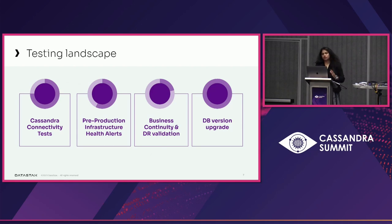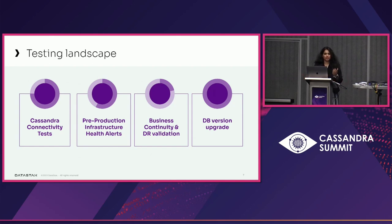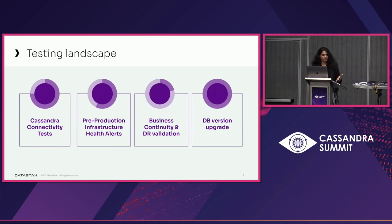Business continuity and DR validations — in most organizations we do not have the ability to perform the same due diligence on business continuity and DR in lower environments as we would do with production environments. So how do we build that muscle if we don't have the same level of ability? Finally, the big elephant in the room which is database version upgrades. Whenever we have a database version upgrade, all bets are off — you need to go through more extensive testing to ensure that nothing happens to the existing infrastructure as well as the new one. This is how the testing landscape looks like in a typical operator world.